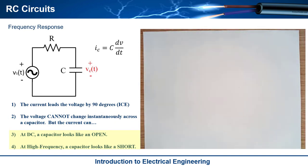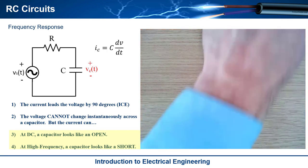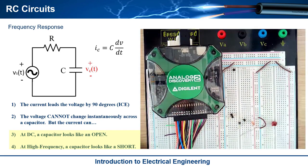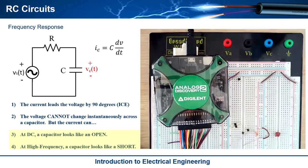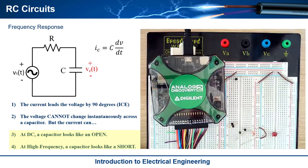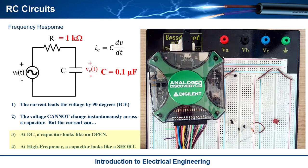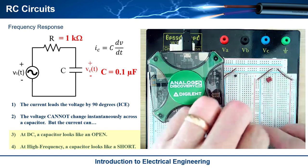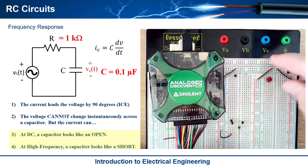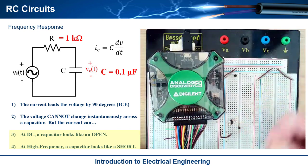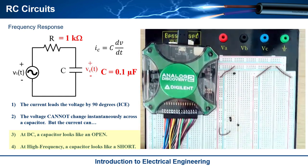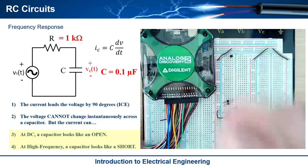Let's go ahead and build this circuit and take some measurements. I'm going to build the RC circuit using a 1k ohm resistor and a 0.1 microfarad capacitor. Here's the 0.1 microfarad capacitor and my 1k resistor. I'm going to use pin headers to bring in my sine wave source using the Analog Discovery 2 to drive in the sine wave, and also measure the response of the circuit using the oscilloscope function.